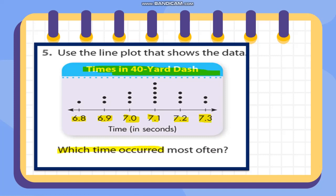Which time occurred most often? Most often means most common. Looking at the line plot, the tallest column — having the most dots — is the one that occurred most often. The answer is 7.1 seconds, because 7.1 has five data points.